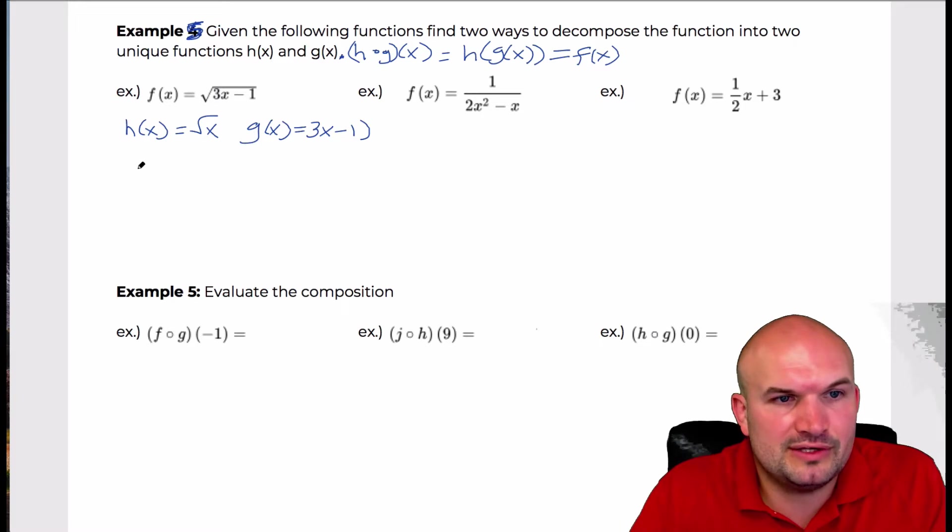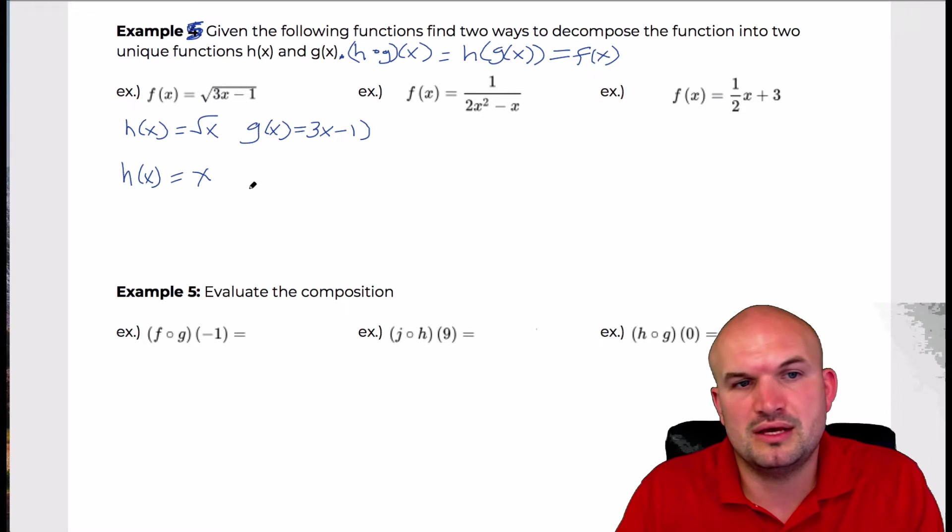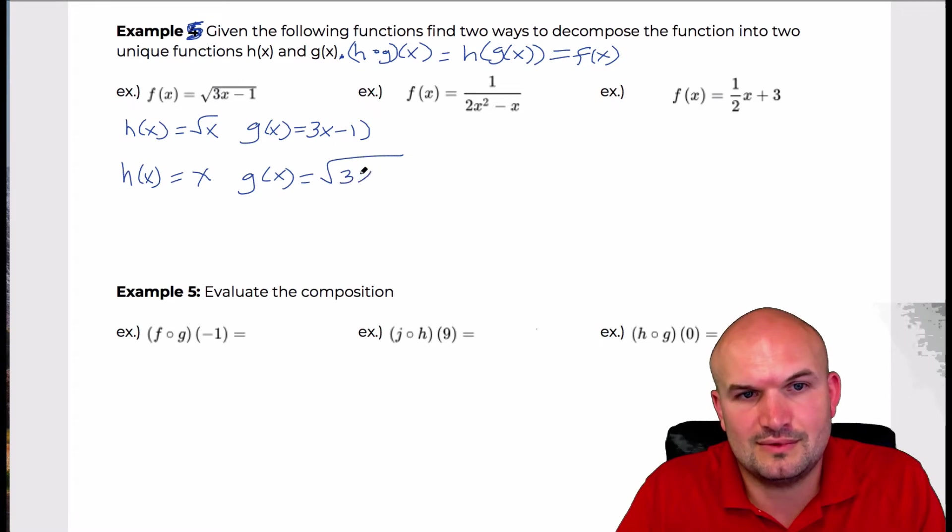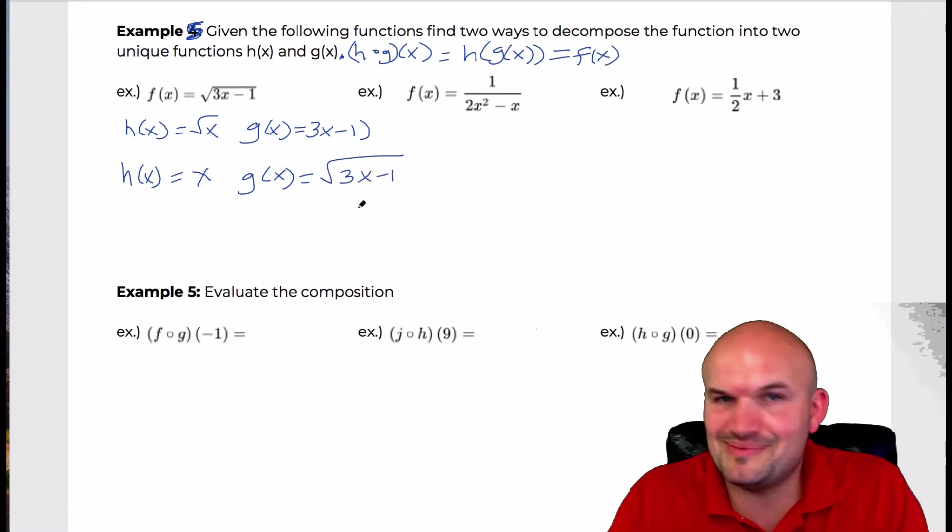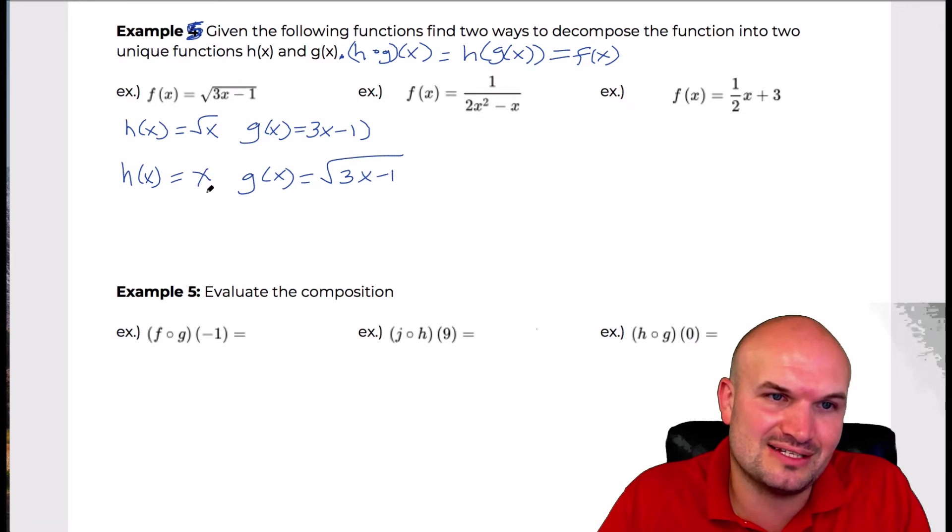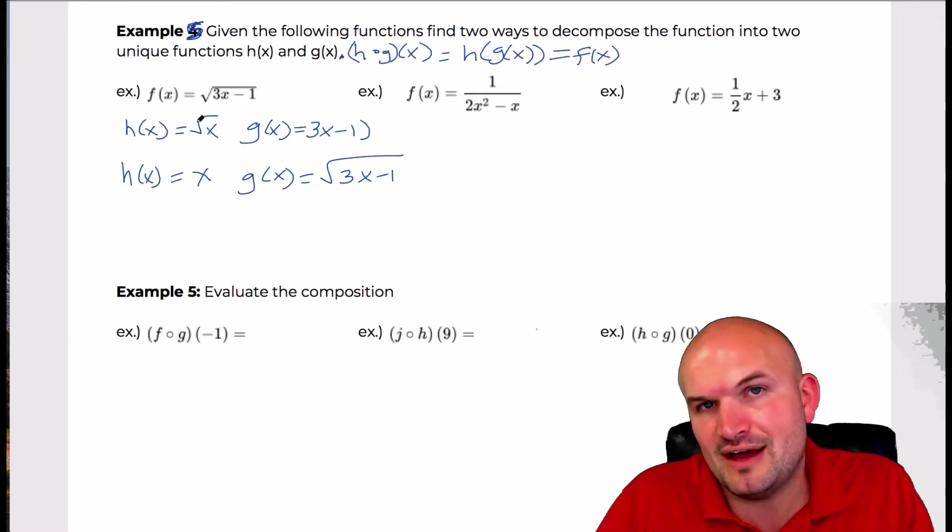Another kind of basic one that you could think about is say, like, h of x, let's just say h of x equals x. And then g of x equals this exact same thing, or x equals all of f of x. Right? Fairly basic example. Because if you plug g of x into h of x, you're going to again get f of x, right?